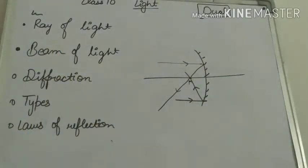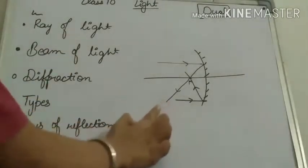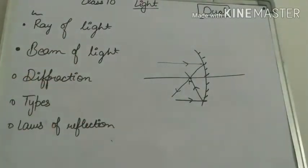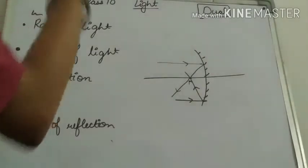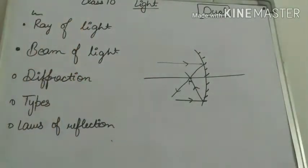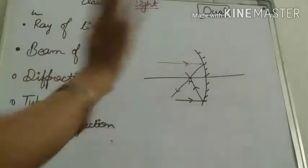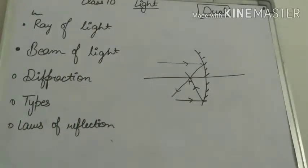Now, beam of light. If there are two, three, four, or more rays, then it will be beam of light. If there is one, then it is a ray of light. Do you understand? Let's take a look at the example.